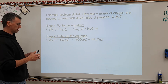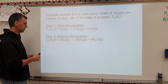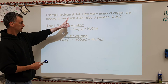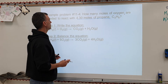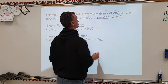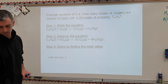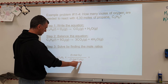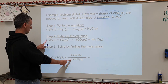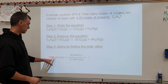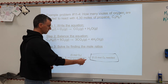Balance your equation and then set this up. The given is 4.30 moles of propane — the number is the giveaway. What are we being asked for? How many moles of oxygen? Write the given first, then the conversion factor: moles of C3H8 on the bottom to cancel, moles of O2 on top. The numbers come straight out of the equation — there's a 5 next to O2 and a 1 next to C3H8. This times 5 divided by 1 gives the answer, which you box after ensuring 3 significant figures is rounded to 3 significant figures.